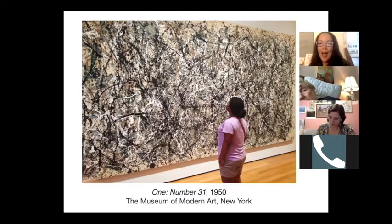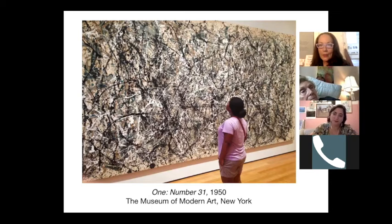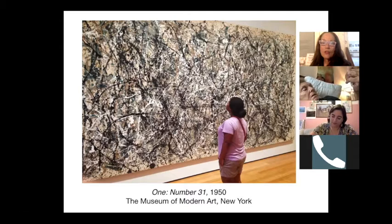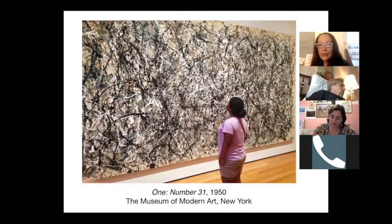This is called abstract expressionism. This is the art that grew up right here in Eastern Long Island, where these artists came from New York City and settled out here in East Hampton and the surrounding area. Abstract expressionism is unique in that it's a physical release of energy — dripping paint, pouring paint, scraping, using bold brush marks, letting the brushstrokes show.